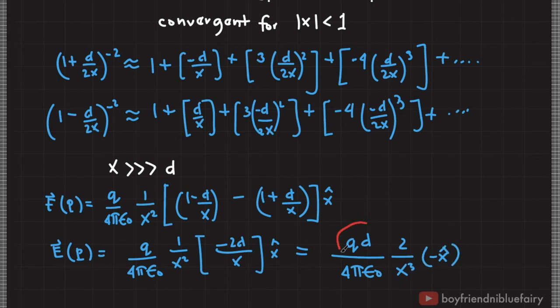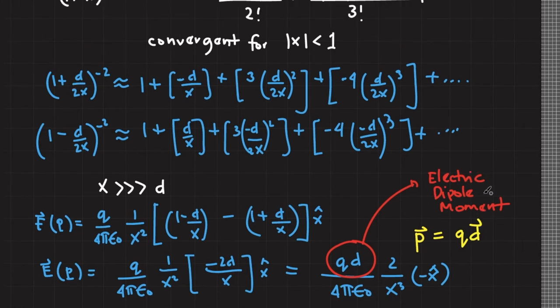Now, this factor charge times d shows up in many calculations involving electric dipole. Hence, it is convenient to give it a special name and represent it with one variable. Physicists call this factor the electric dipole moment and usually represent it as vector p equals q times vector d. And remember, this d here is the displacement vector from negative charge to positive charge.